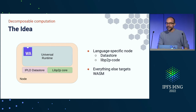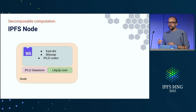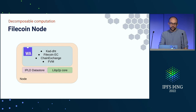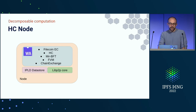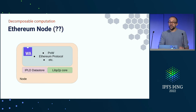An IPFS node could look something like this — IPL codecs, bitswap, and the Kademlia DHT. A Filecoin node could be something like that with FVM also targeting the runtime, with the expected consensus of Filecoin and so on. An HC node could have different consensus algorithms and the HC-specific protocol all operating in the same network. We could even have an Ethereum node targeting proof of work and the syncing protocols specific for Ethereum.